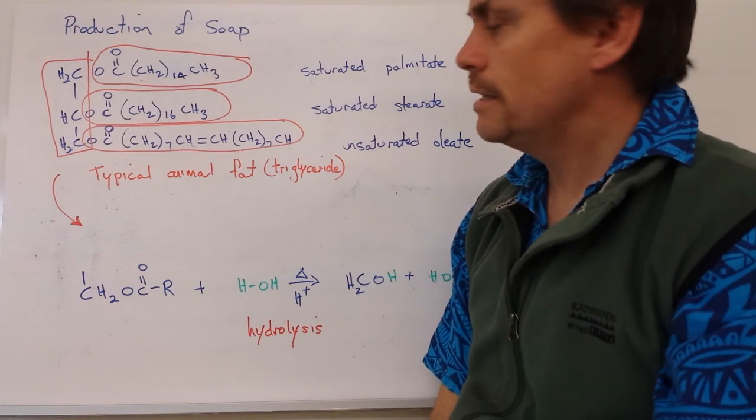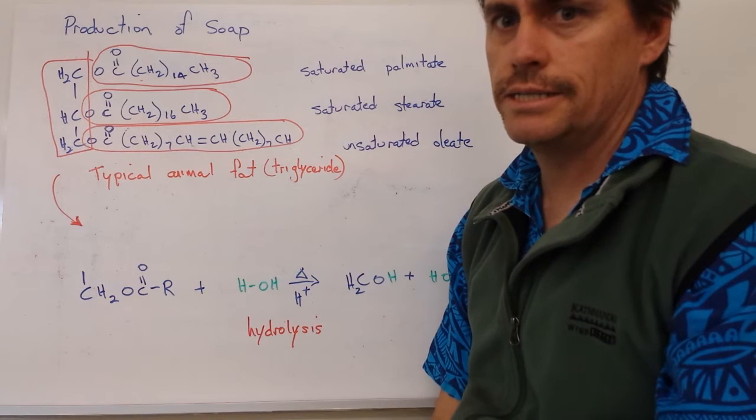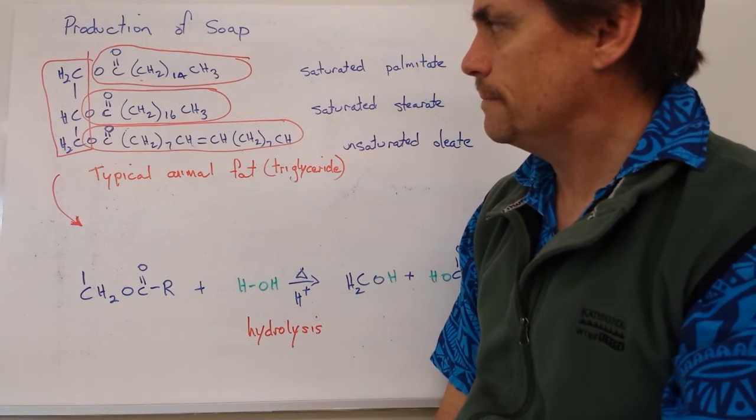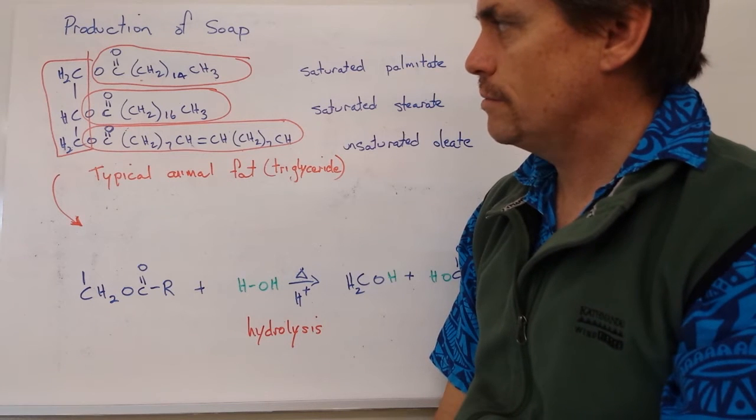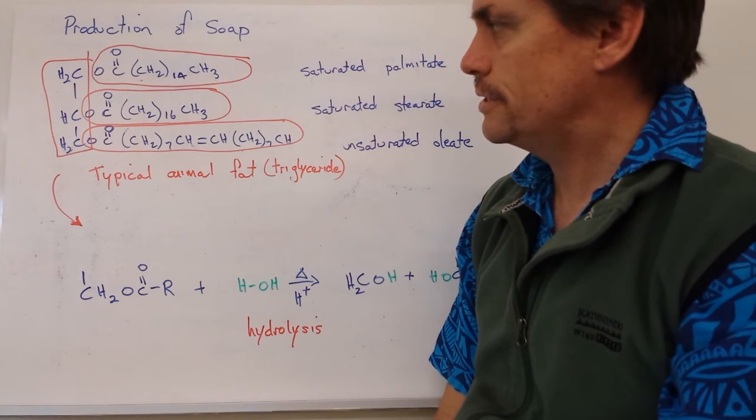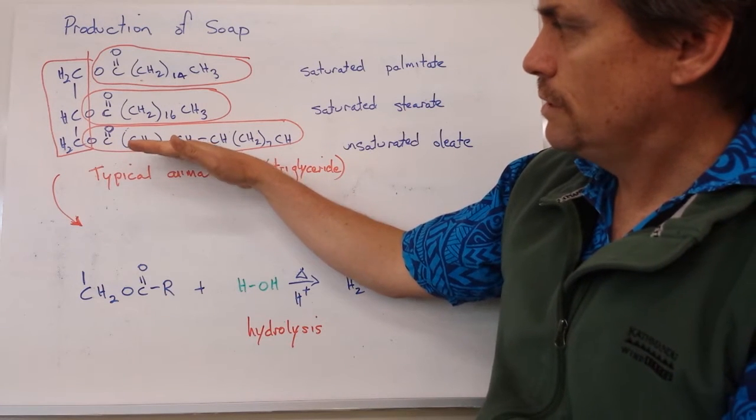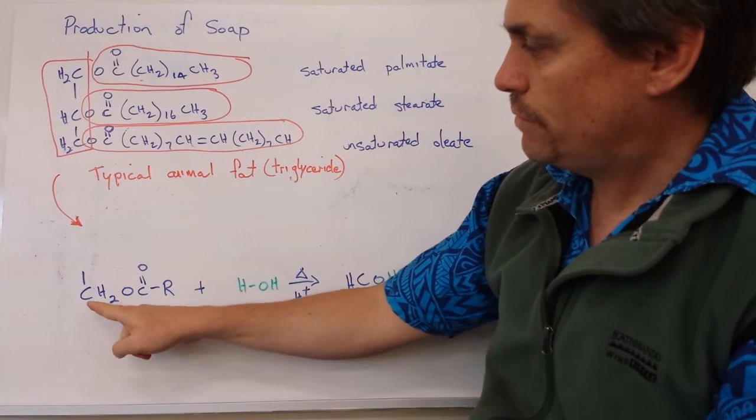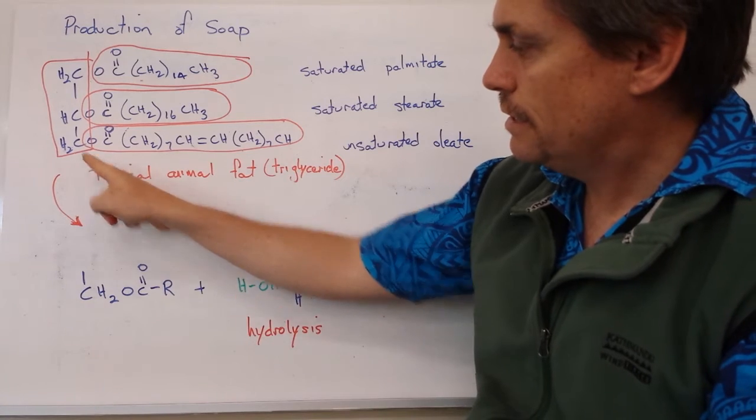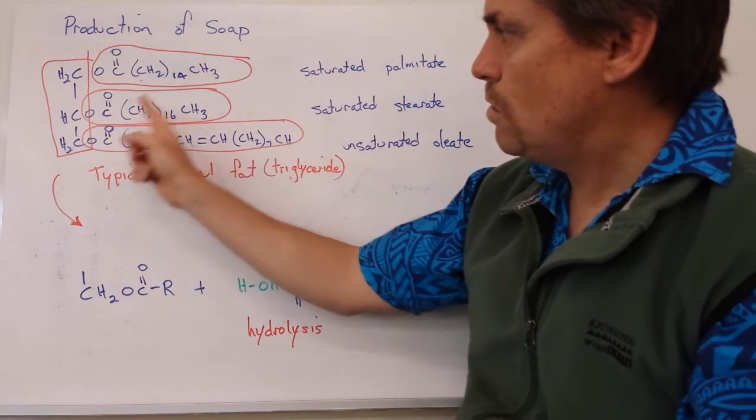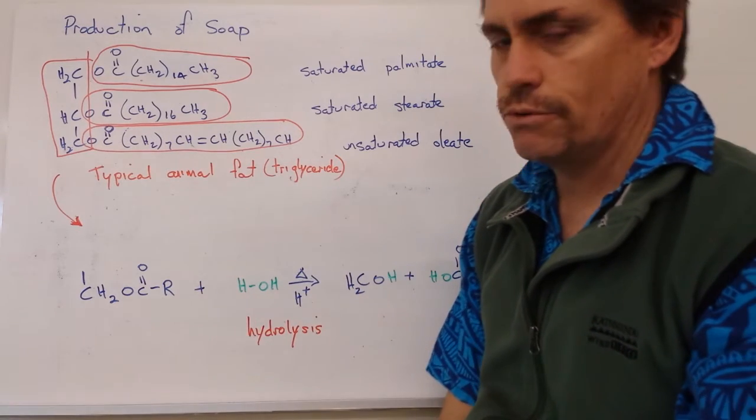So, in using our triglyceride, we need to understand a little bit of chemistry as to what happens when we break this molecule down. Now, to do that, we need to look at ester linkages. And what I've done here is take the bottom part of the molecule and simplify it. So we've got our CH2 attachment here. We've got our ester linkage in here. And I've substituted this long carbon chain for an R group.